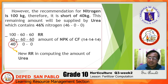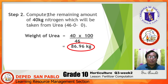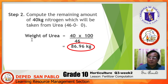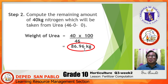Step two: compute the remaining 100 kilograms of nitrogen to be taken from urea (46% N). The new recommended rate for urea is 100 kilograms. So: 100 times 100 equals 10,000, divided by 46, giving us 86.96 kilograms of urea — wait, the remaining amount is actually 40 kg (160 minus 60 already satisfied by CF = 100 remaining; using RR of 40): 40 times 100 divided by 46 equals 86.96 kilograms of urea.